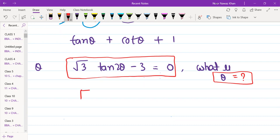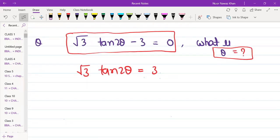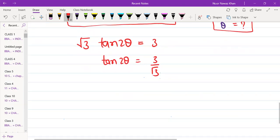√3 tan2θ = 3, so tan2θ = 3/√3. Now, any child will tell me what is 3 by root 3?